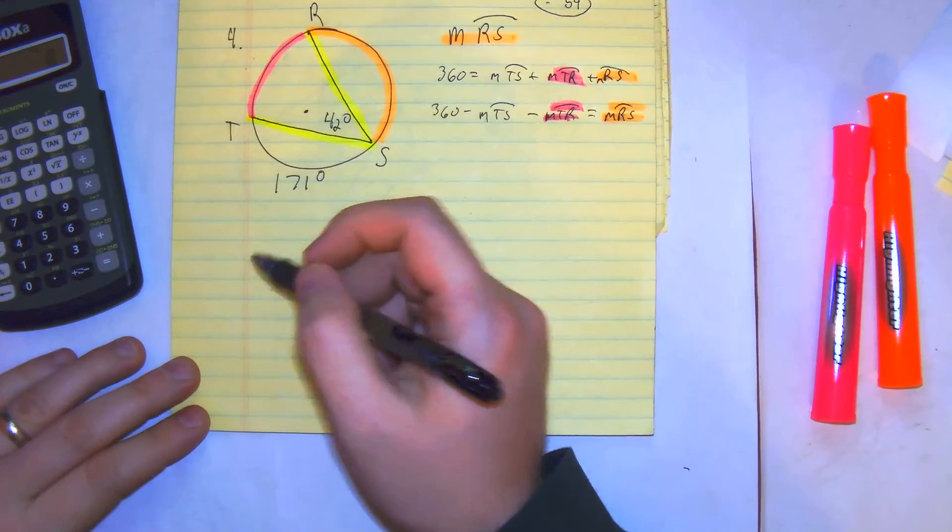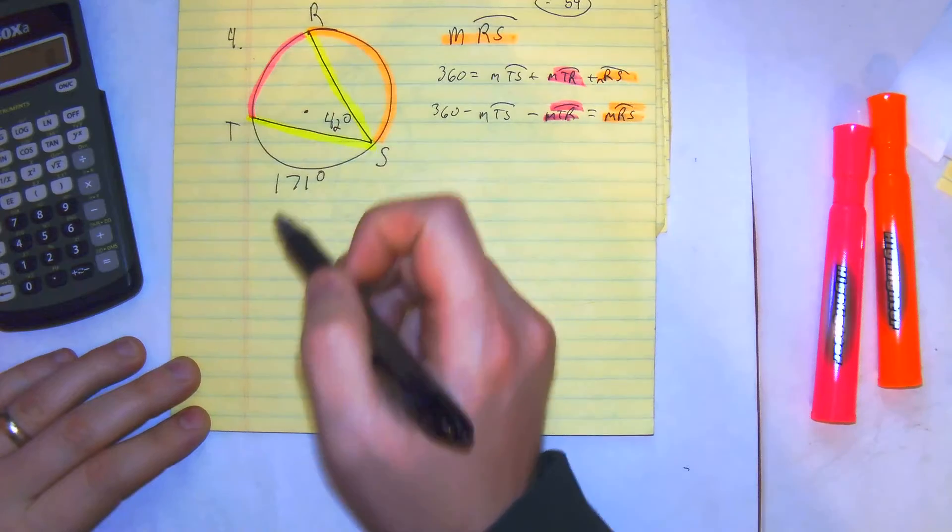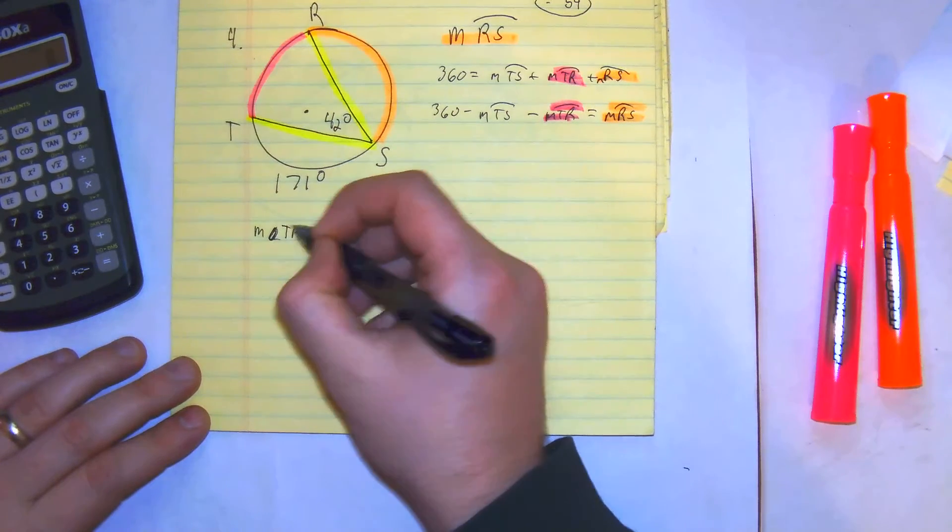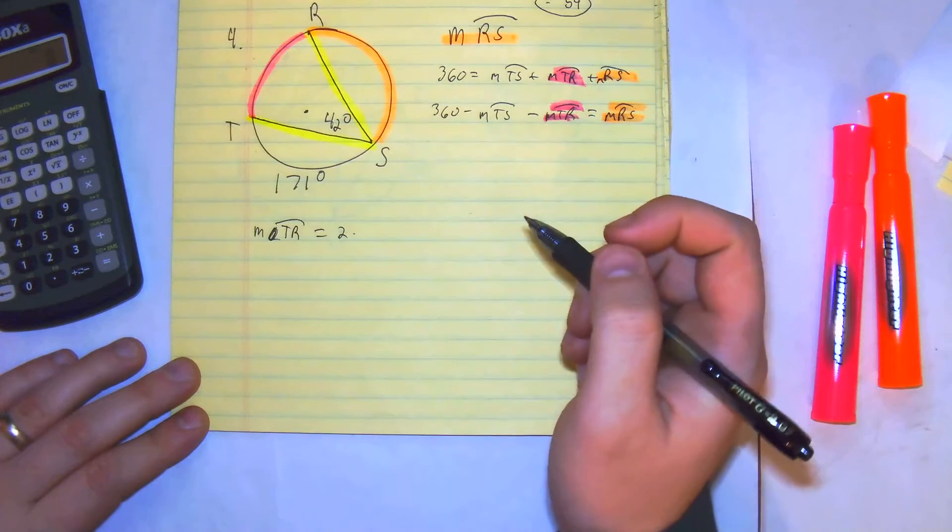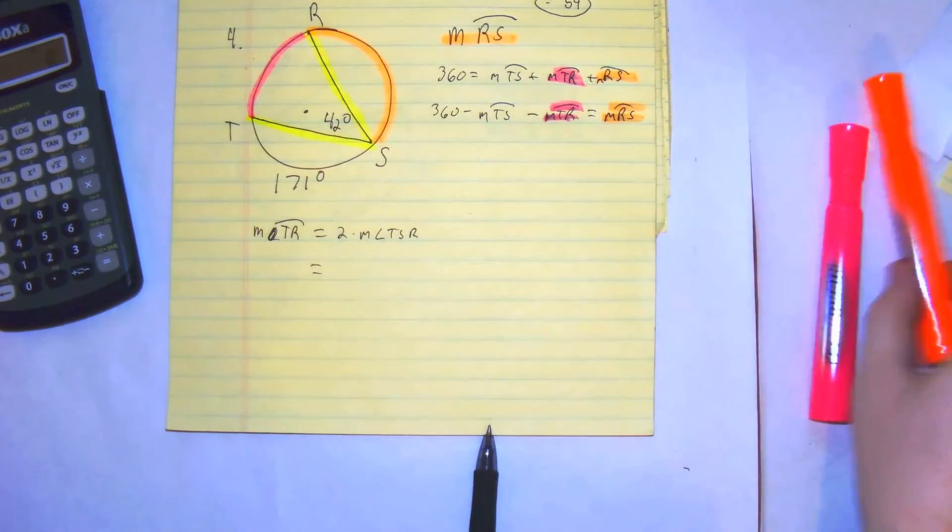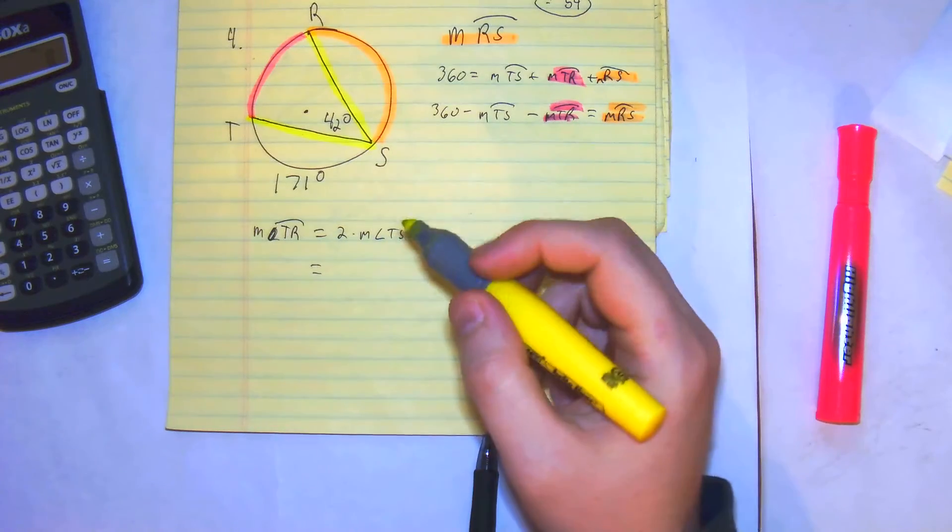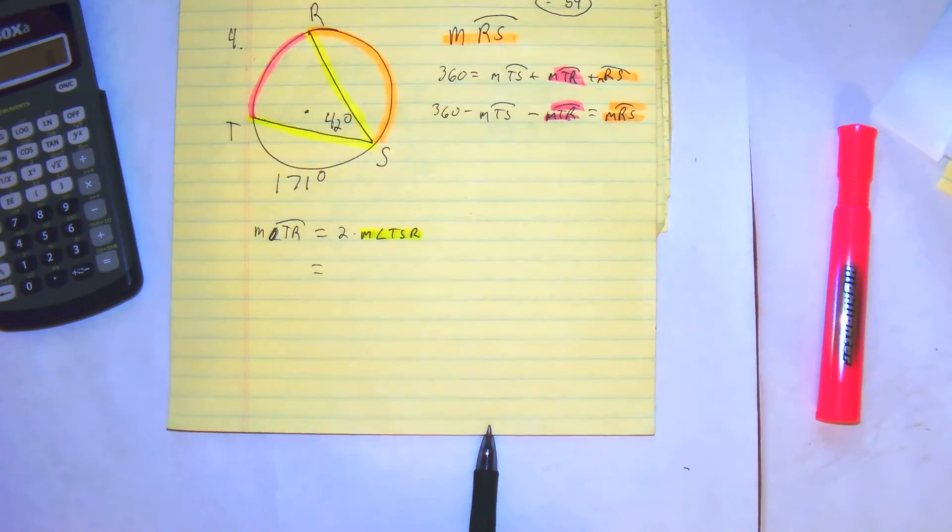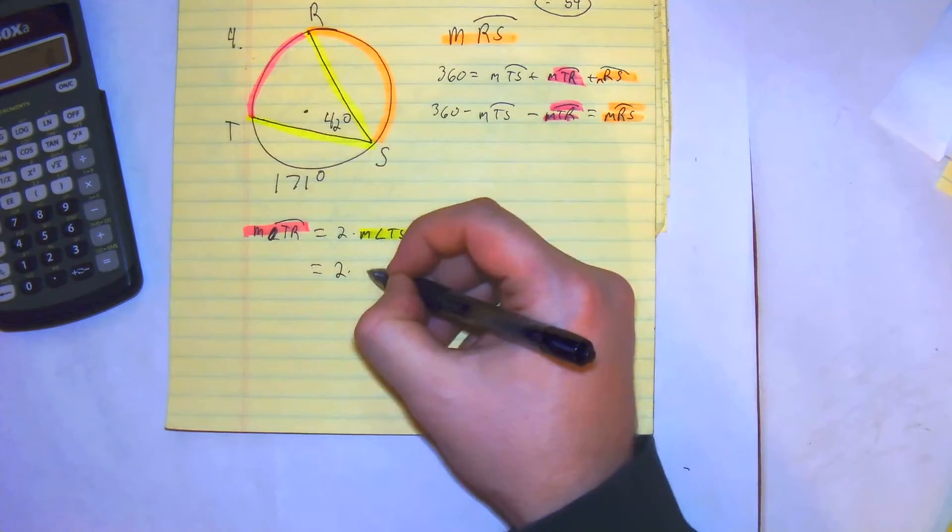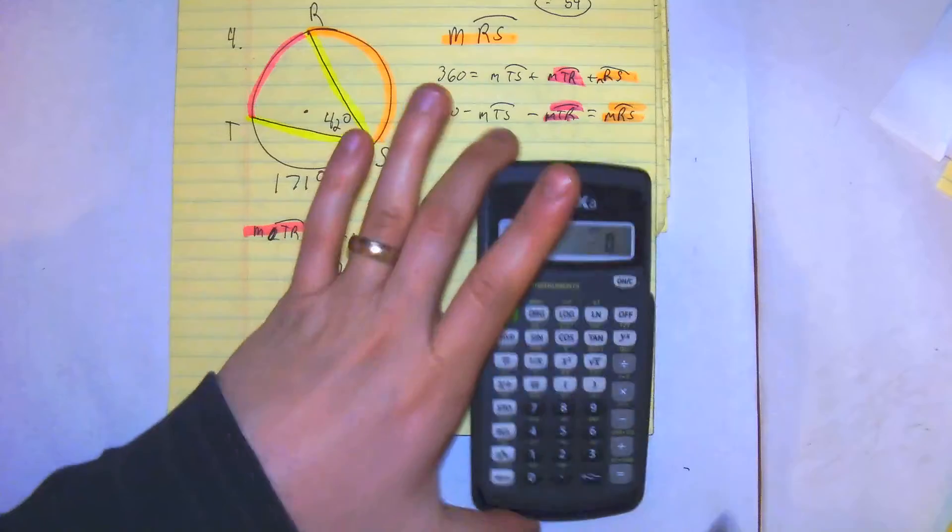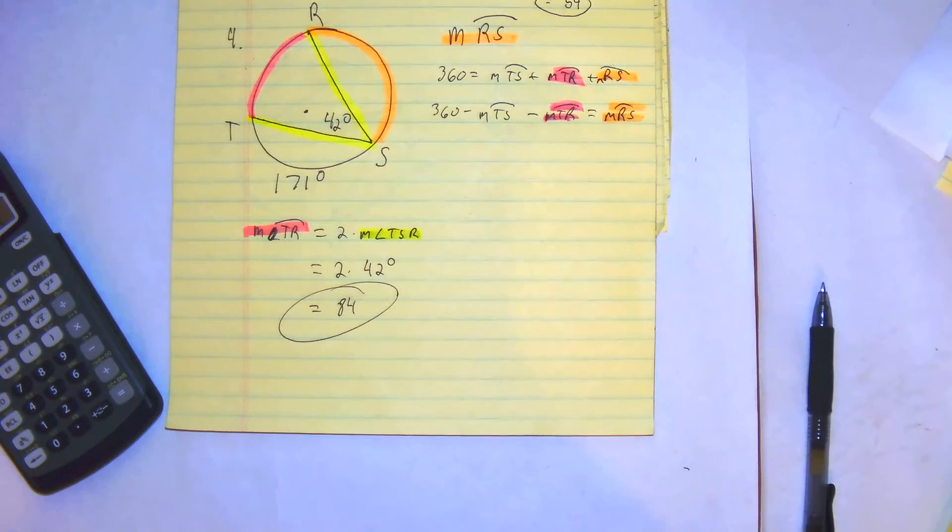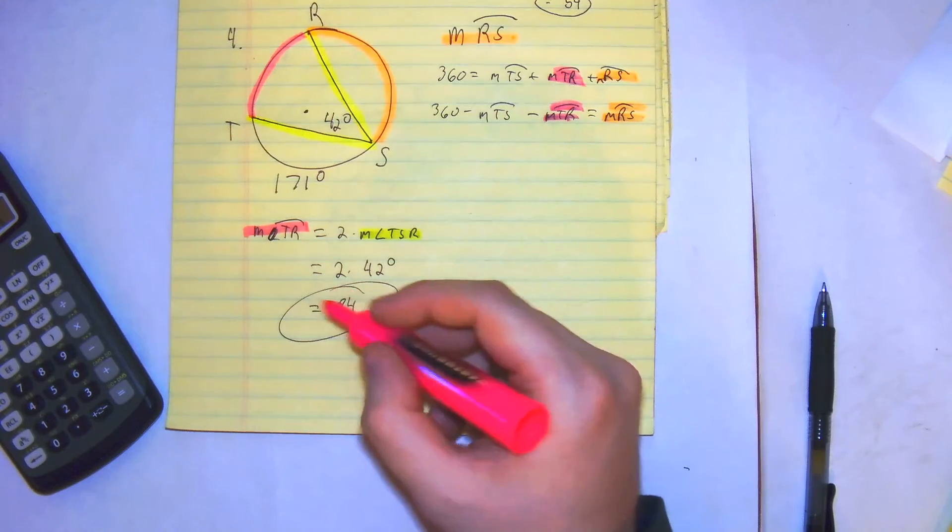From here, we're going to do the inscribed angle formula, which is the measurement of tr is equal to 2 times tsr. We're going to plug it in. Again, I'll just highlight it one more time. I know I'm going extra long with this. I just want to emphasize what our thought process is. So 2 times 42, 2 times 42 gets you 84. So the measurement of tr is 84 degrees.